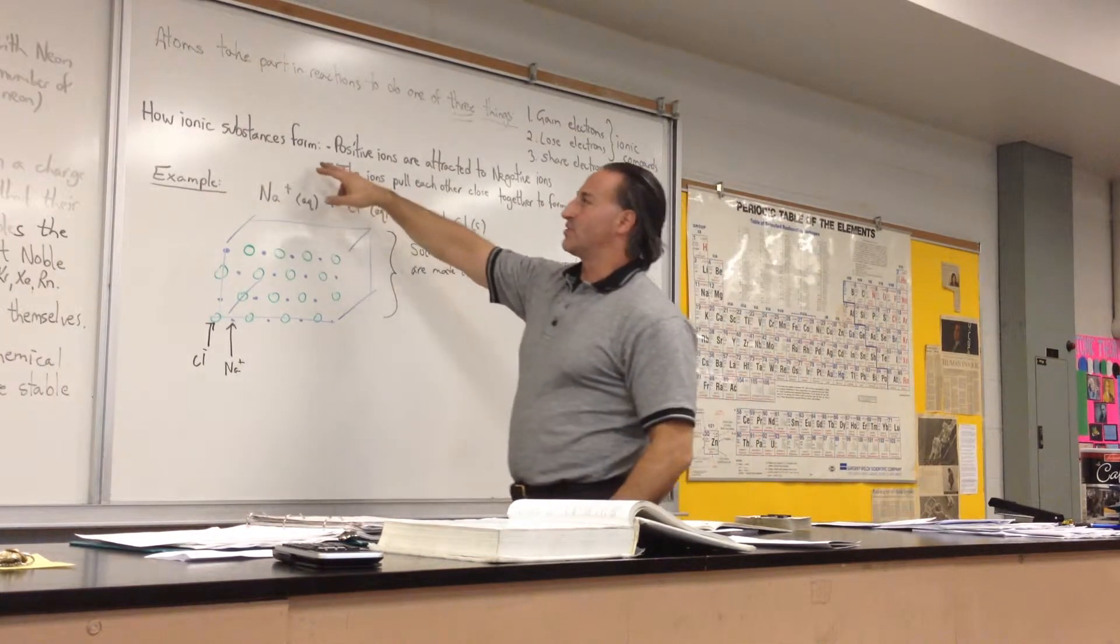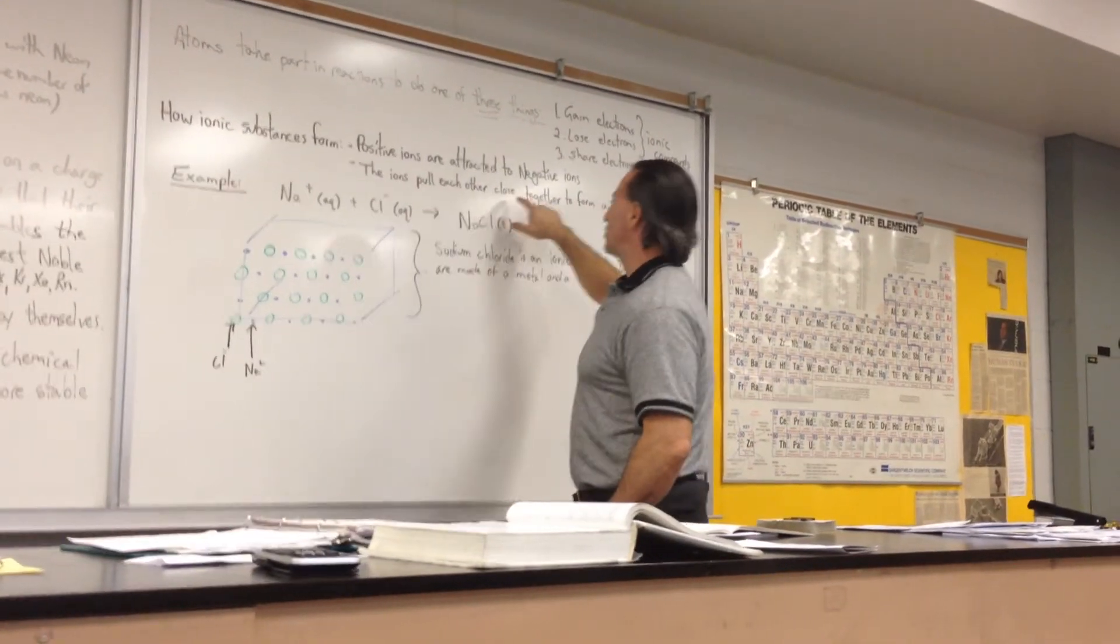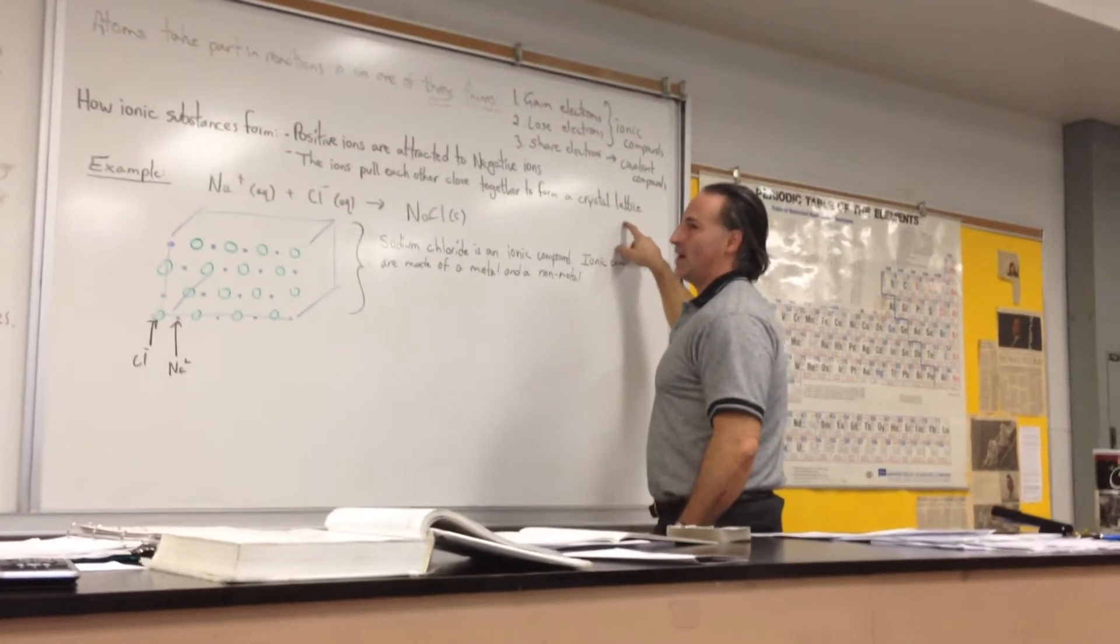So how do ionic substances form? Positive ions are attracted to negative ions, so the ions pull each other close together to form a crystal lattice.